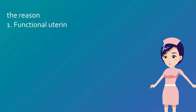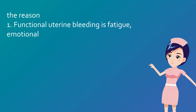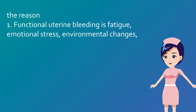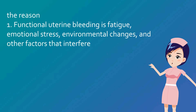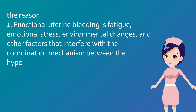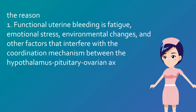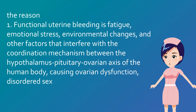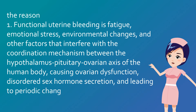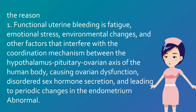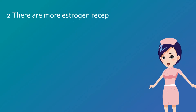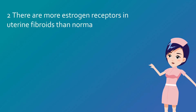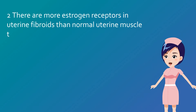Regarding causes: dysfunctional uterine bleeding is caused by fatigue, emotional stress, environmental changes, and other factors that interfere with the coordination mechanism between the hypothalamus-pituitary-ovarian axis, causing ovarian dysfunction, disordered sex hormone secretion, and leading to periodic changes in the endometrium.